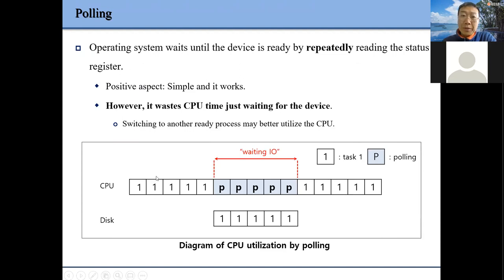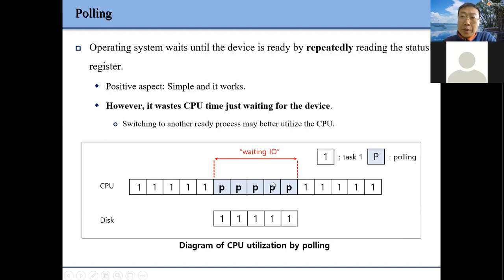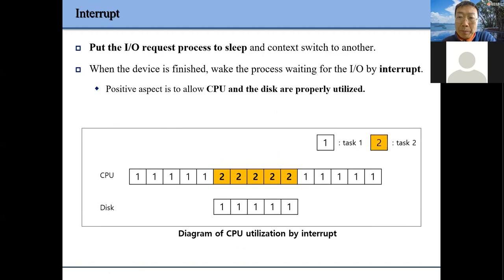This figure shows that if we use polling, the CPU needs to busy-wait until the IO device is ready or a particular operation has finished. During this time period, although the CPU is occupied, we didn't do any real work — we just checked the status, busy-waiting.